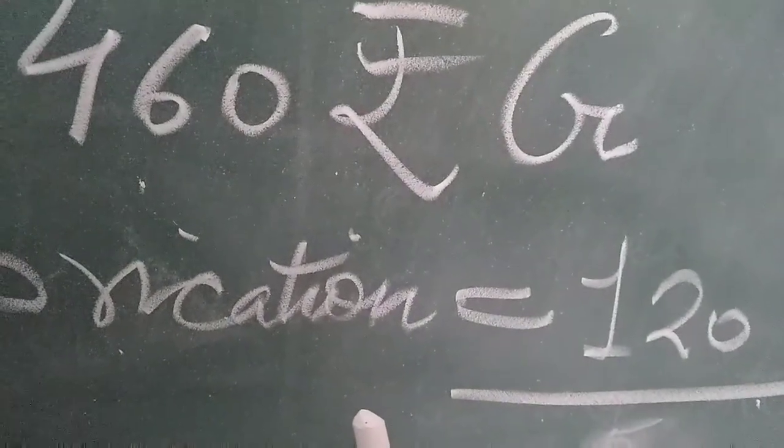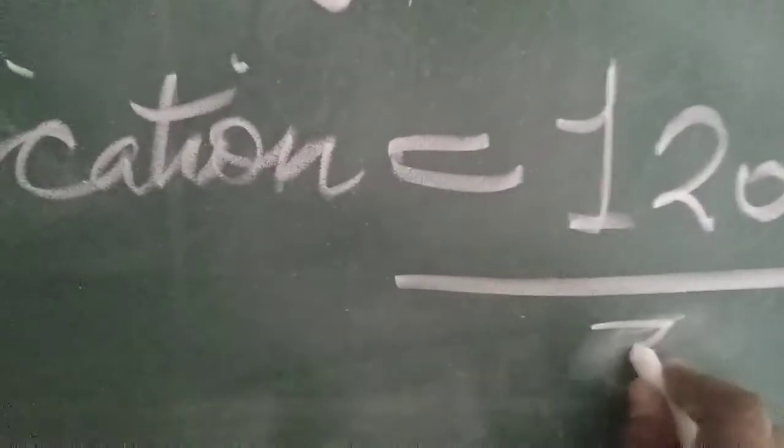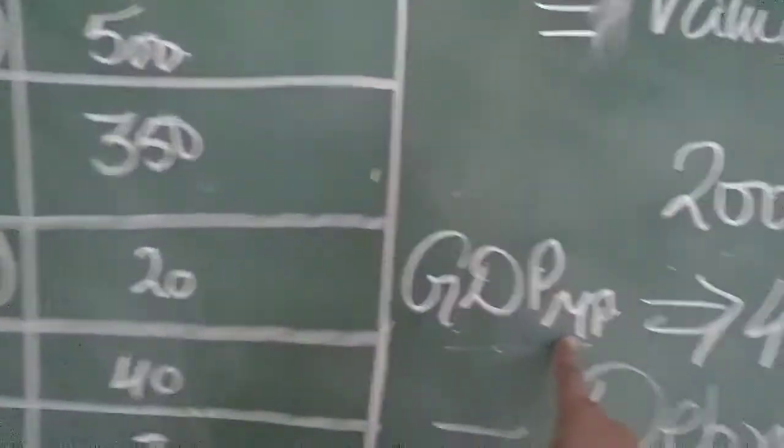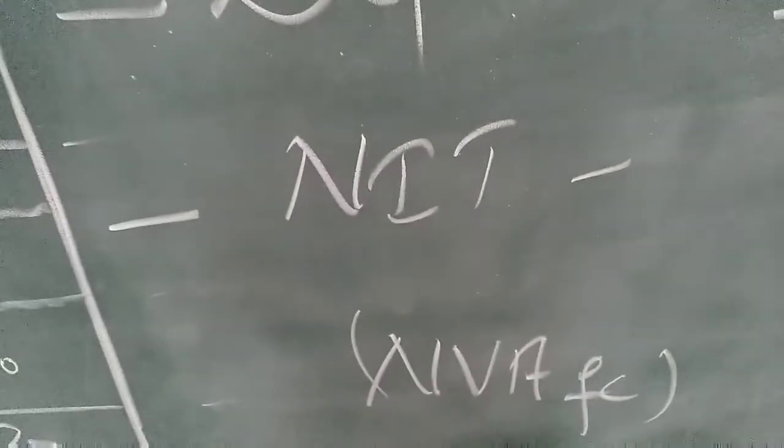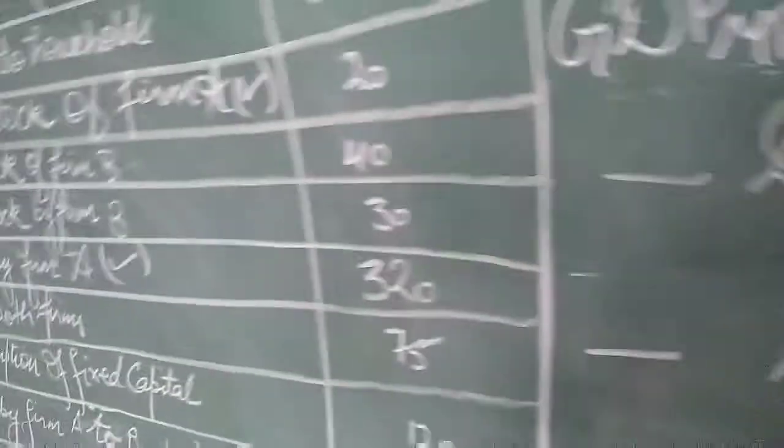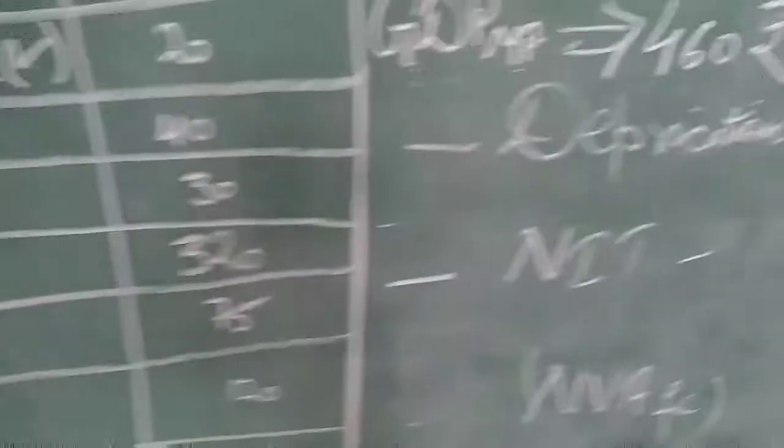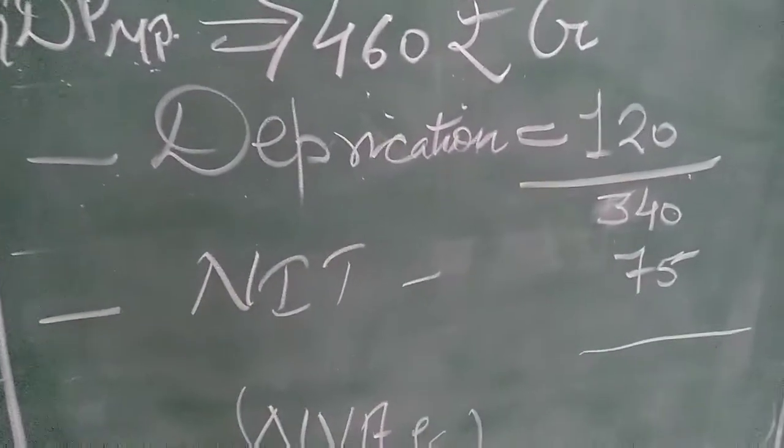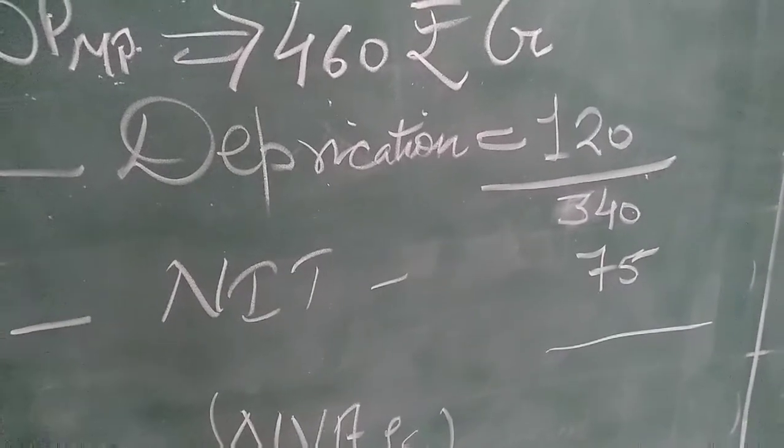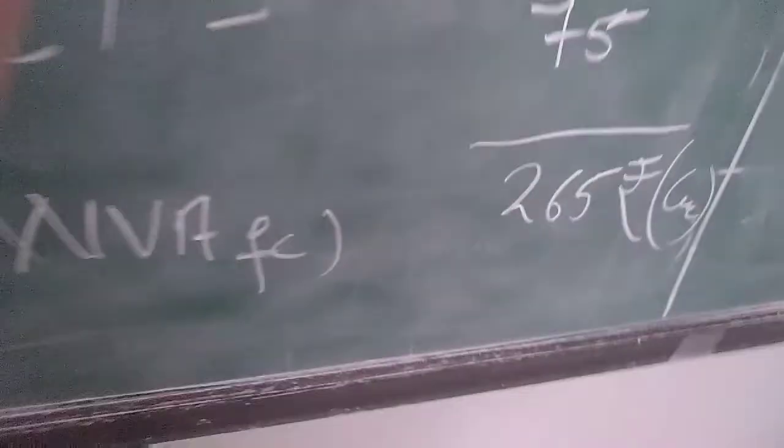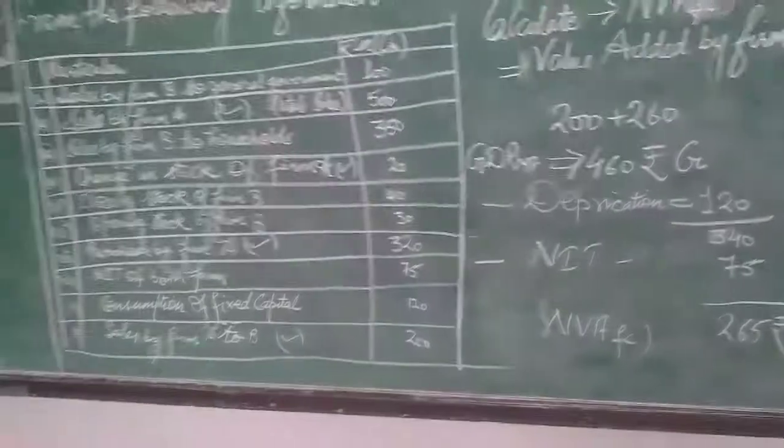460 then 120 and that will be added with the minus symbol in front of it. So that will be minus. This is 460 minus 120, that is 340. Then we have 340 and then we need MP to be transferred to FC. FC we need, so we have NIT given for both firms. We have 75 over there. So we will minus this one also, and that accounts to us with 265. And this is NVAFC.